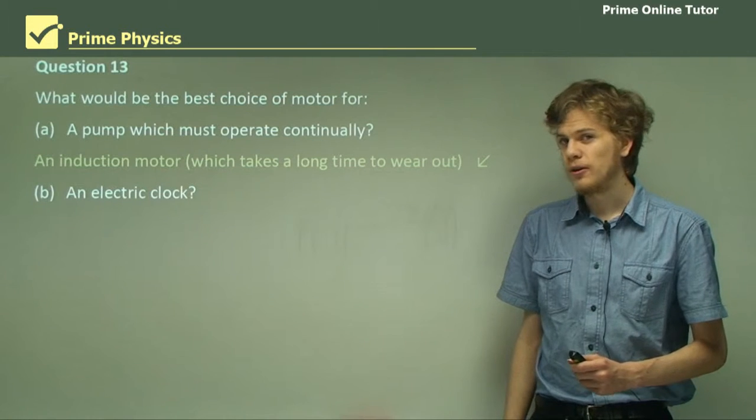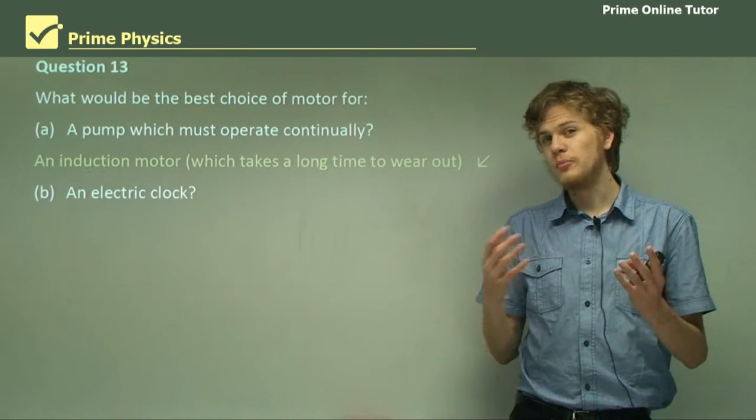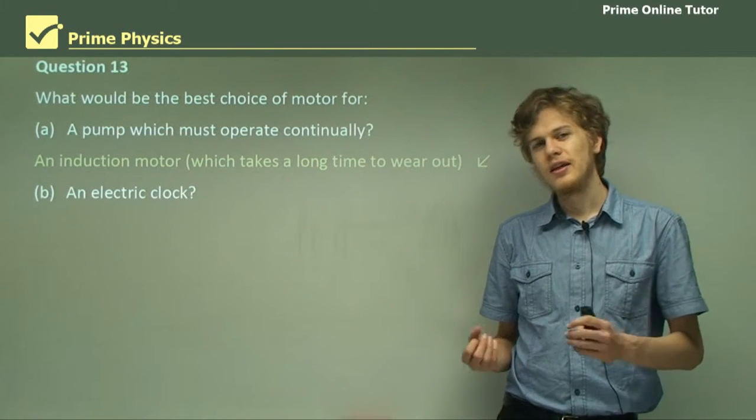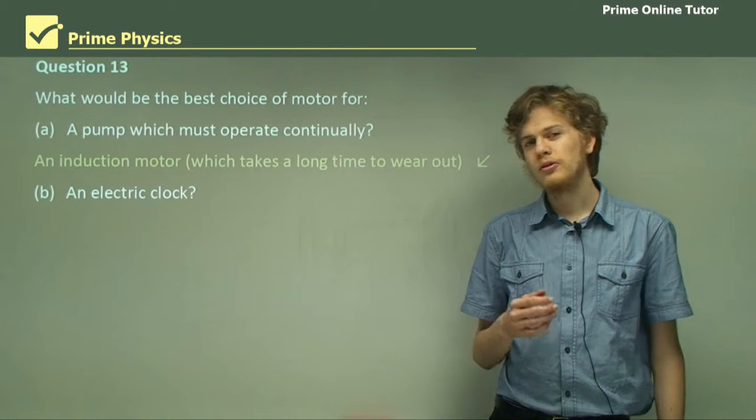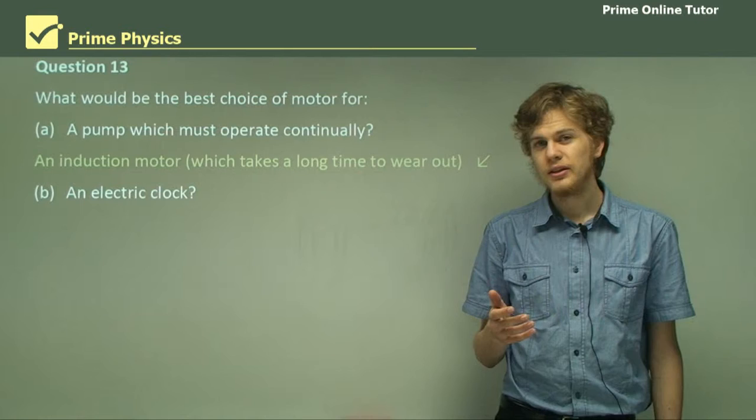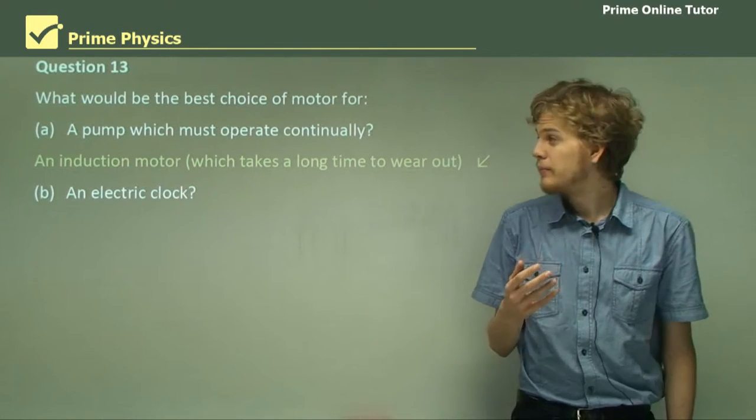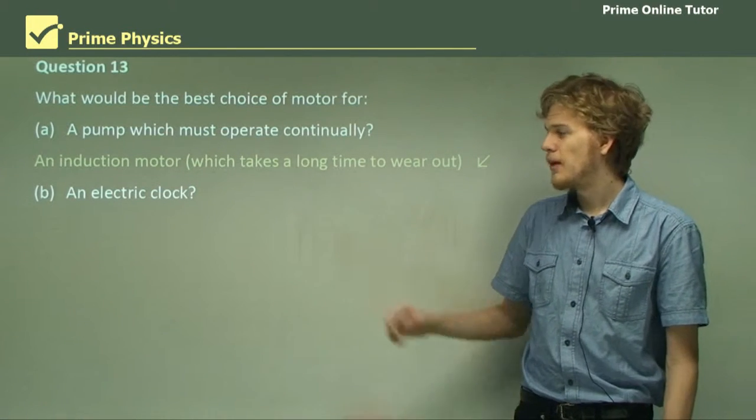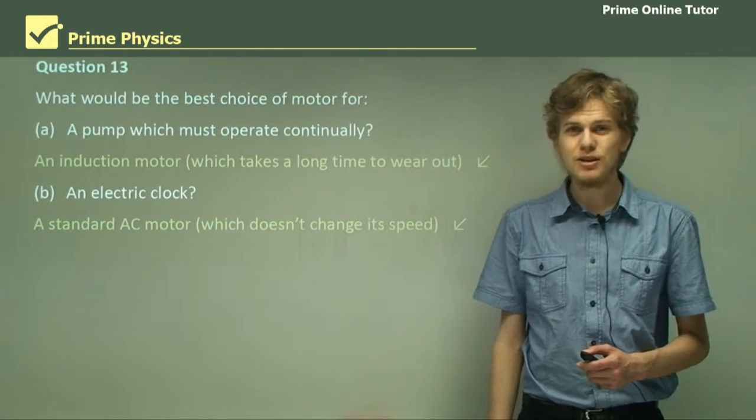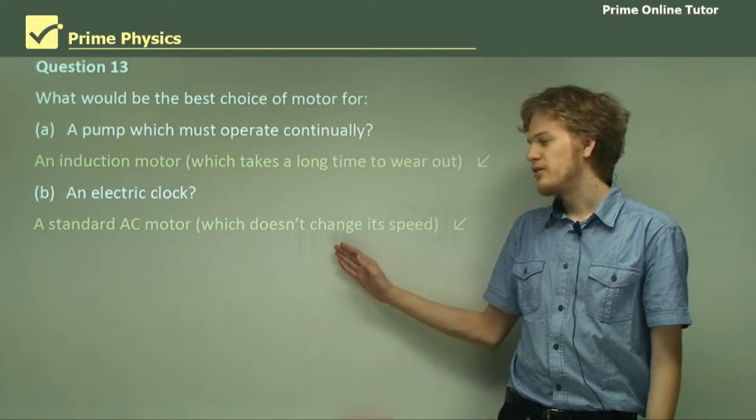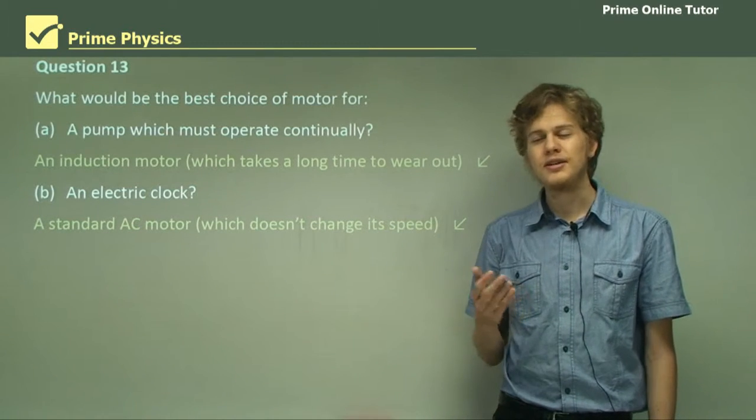How about an electric clock? So a domestic low-powered device that simply ticks at a constant rate. Well, if we want something that ticks at a constant rate, and we don't want to use up too much power, then our best choice would be to use a standard AC motor, because this has a power source which will never change its speed.